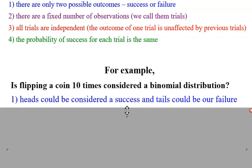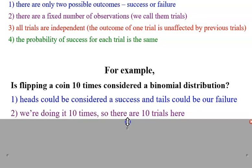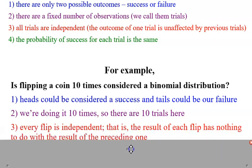Number two says there are a fixed number of observations, fixed number of trials. Here it says we're flipping the coin 10 times. So that part is our trials. We're doing something 10 times, so that is your trials here. So far we're good - check, check. Step three says all trials are independent. Every flip is independent of each other. The result of each flip has nothing to do with the result of the preceding one.